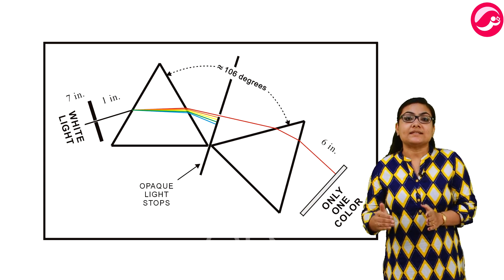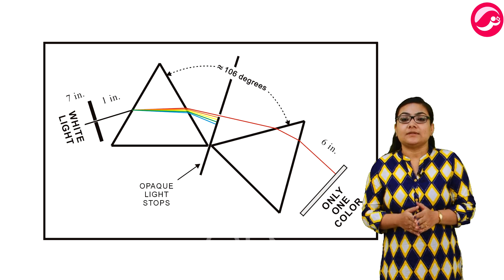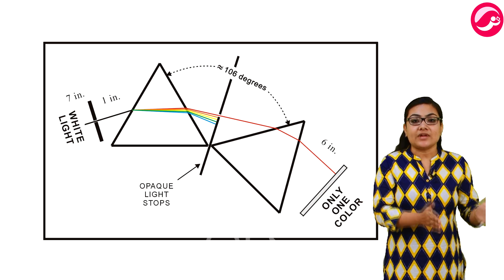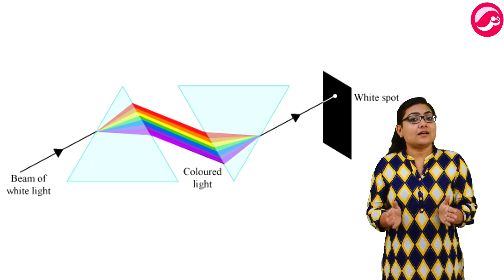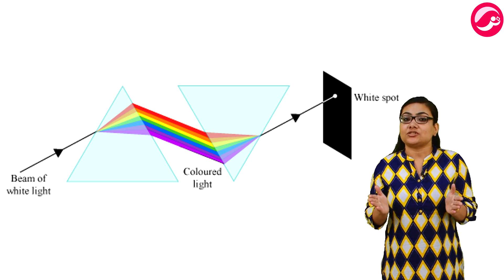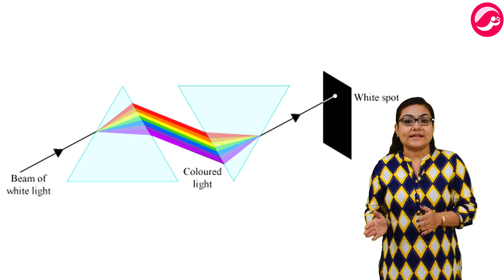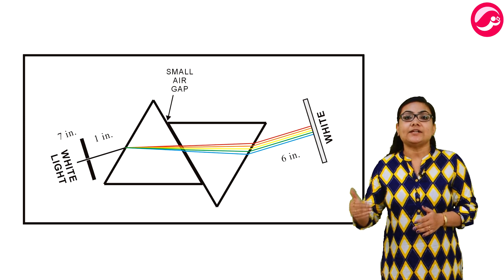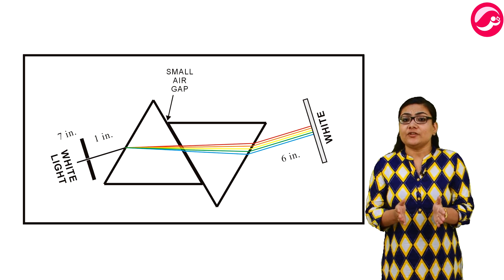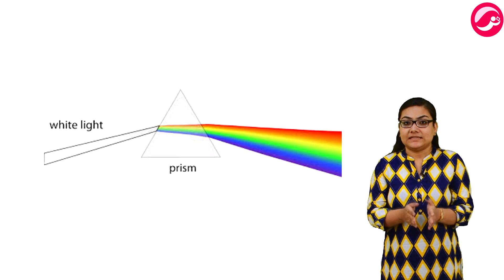When he examined each color in turn emerging from the second prism, he found that there was no further splitting, and that the rays of different colors simply bent on passing through the second prism. When a ray of light enters the prism it bends towards the normal, because light is entering from a rarer medium to a denser medium. Similarly, when the light emerges from the prism, due to the angle of prism and the different wavelengths of different components of white light, the emergent ray gets segregated into different colors. Finally, a colorful band of seven colors is obtained — this phenomenon is called dispersion of white light by the prism.